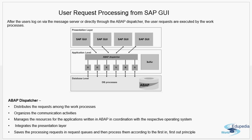User requests are processed from the SAP GUI. After users log on via the message server or directly through the ABAP dispatcher, the user requests are executed by the work process. Work processes are the basic components which execute whatever user requests are sent to the SAP system. The request goes to the ABAP dispatcher, which dispatches it to the different types of work process, where the request is executed, the database is contacted, and the result is sent back to the SAP GUI.